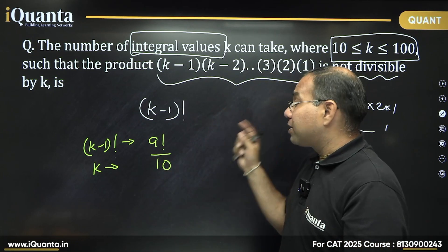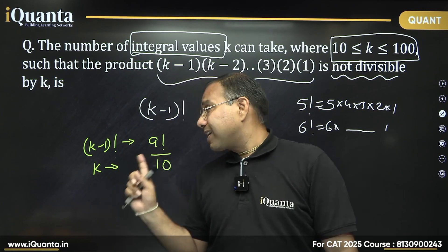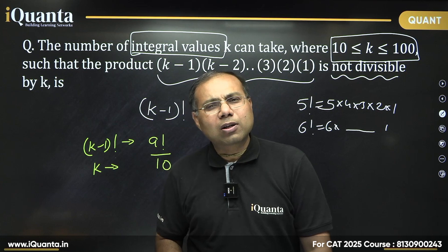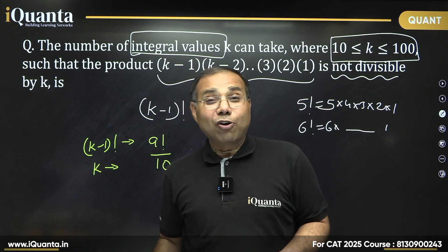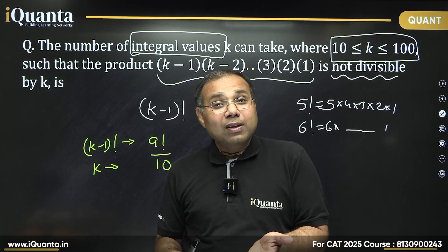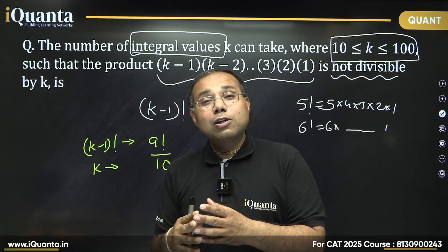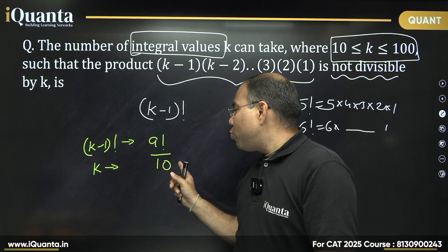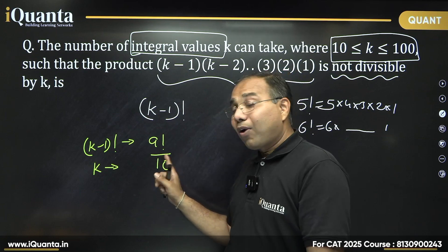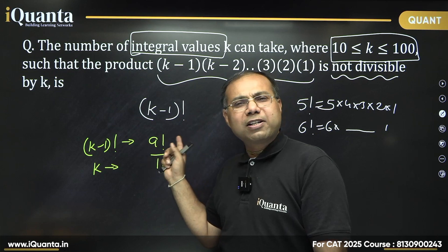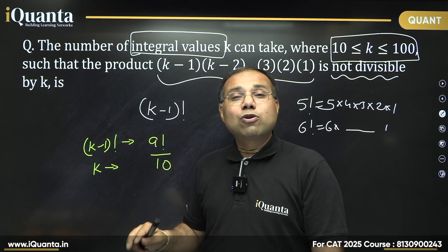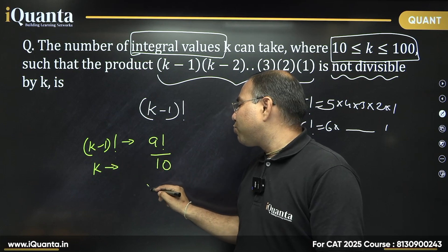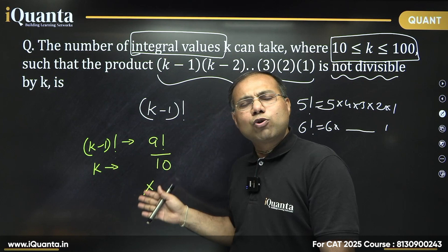Don't multiply everything out. The key point is to look at the prime factors of k. Here, 10 = 5 × 2. Now, 9! is the product 9·8·7·6·5·4·3·2·1 — it contains both 5 and 2. So 5 × 2 = 10 divides 9!. That means 9! IS divisible by 10, so k = 10 does not work. Because 5 × 2 is contained in that product.